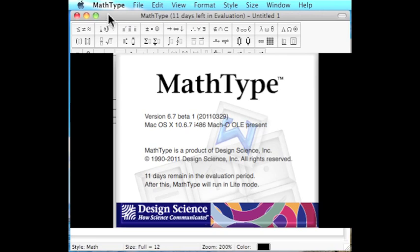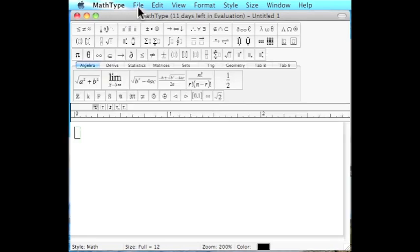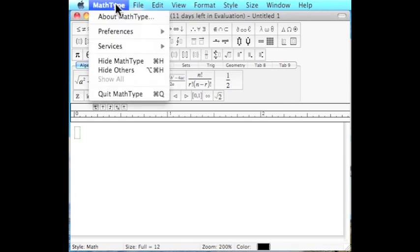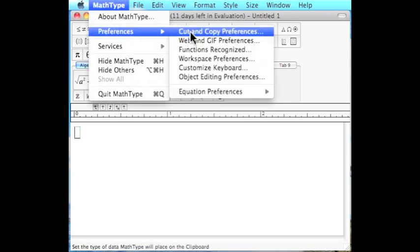What we want to do is look at one of the features that has changed from the earlier versions, and that is in our MathType preferences, the Cut and Copy preference.